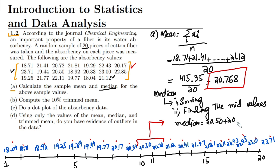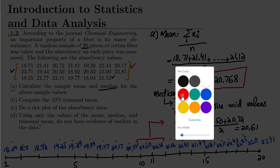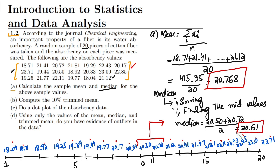That is 20.50 plus 20.72 divided by 2. From it, what will we get? We will get the answer, and that is 20.61. That is the answer of our question, the median.